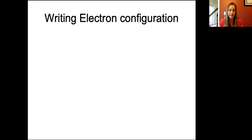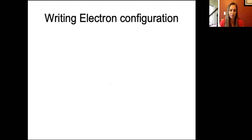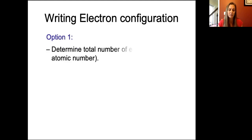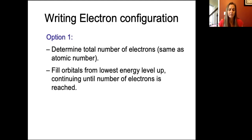So let's talk about how we write electron configurations. Electron configurations tell us what principal energy level or period the electron is in, what orbital shape it's in, and how many electrons are in that orbital shape. Our first option is to determine the total number of electrons — which equals the atomic number — and then fill orbitals from the lowest energy level up, continuing until that number of electrons is reached.